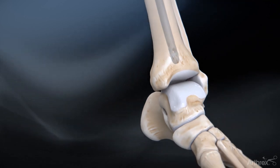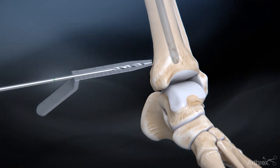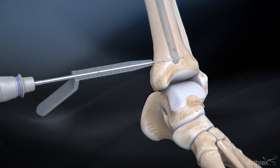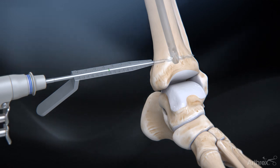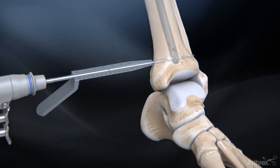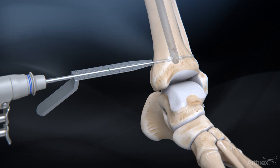For distal fixation, the screws are targeted using fluoroscopy. Drill bicortically through the bone using the 4.0 mm freehand drill. Measure the screw length using the distal depth gauge and the depth mark at the 4.0 mm freehand drill.